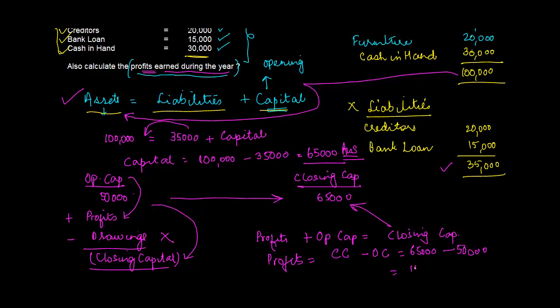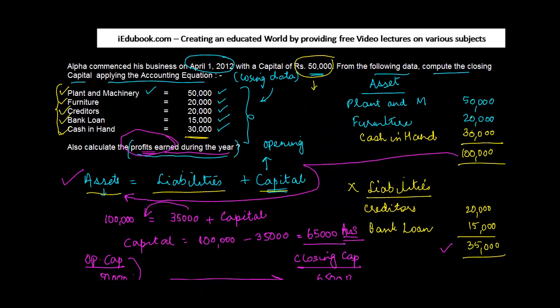65,000 minus opening capital is 50,000. So the difference between the two or the profits are equal to 15,000. So the profits during the year are equal to closing capital minus opening capital, which is 15,000.